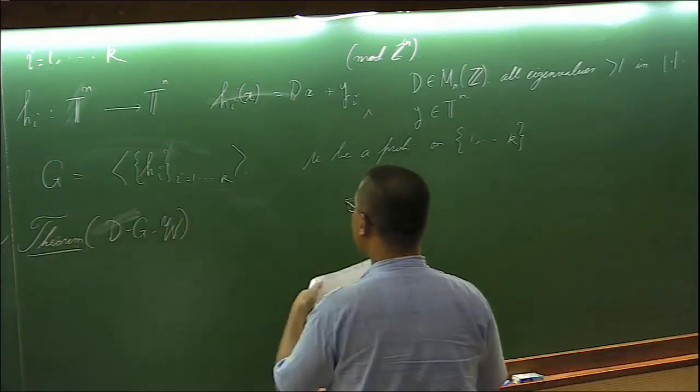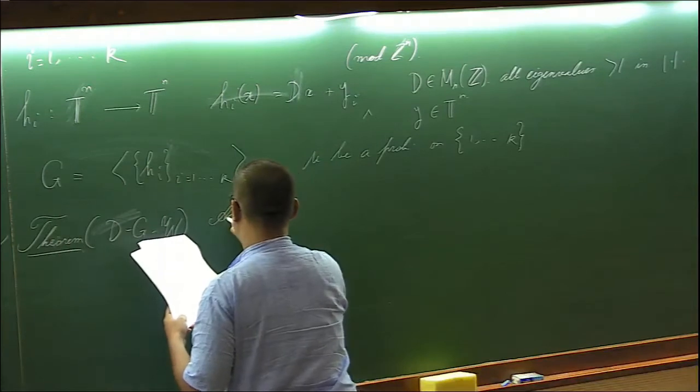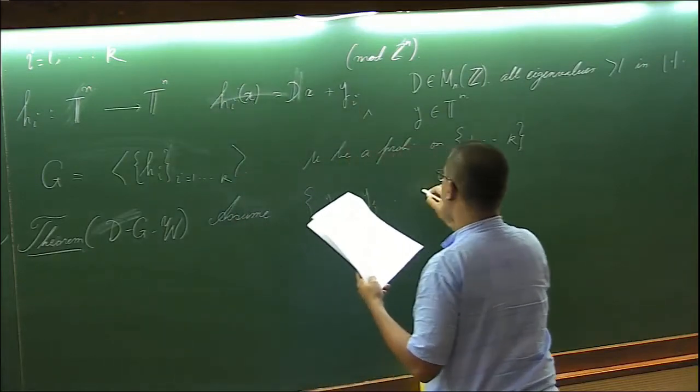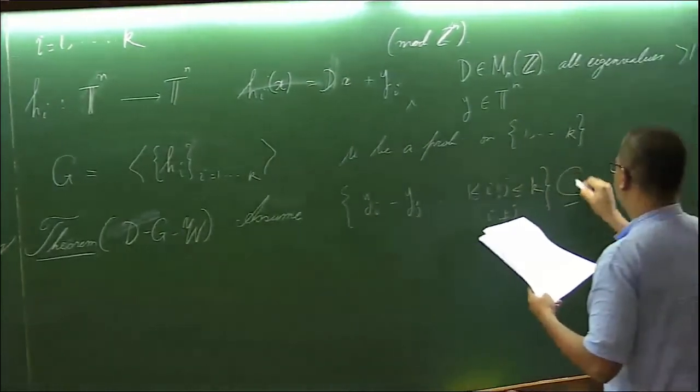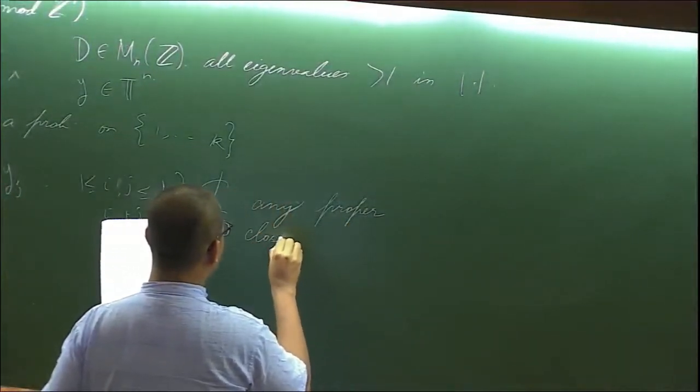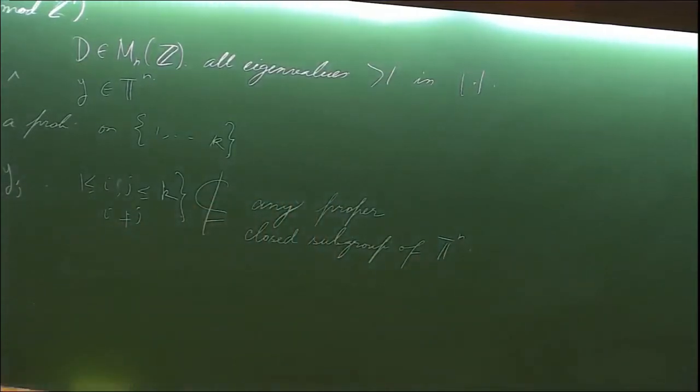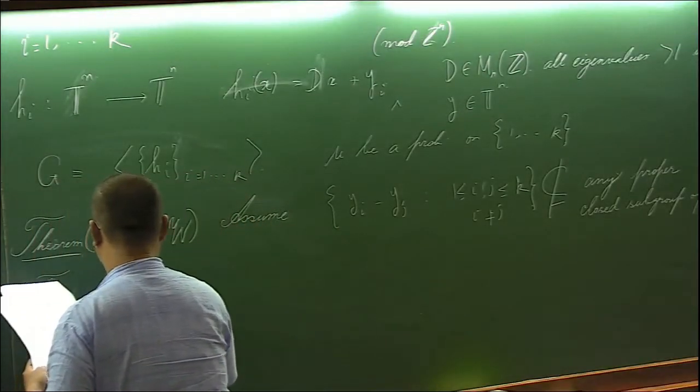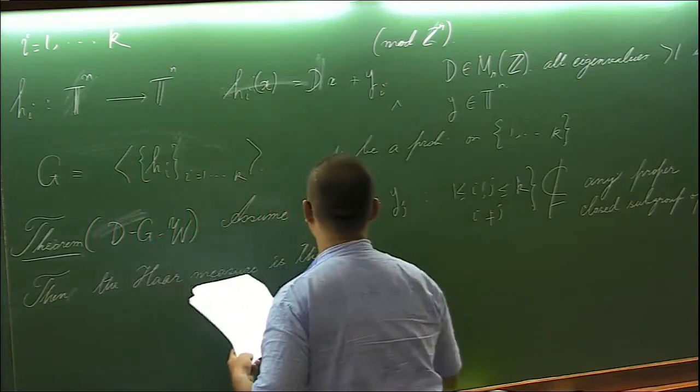In the setup described above, that is I have such a collection of maps, assume the set of all differences in the translations yi minus yj. Assume that this set is not contained in any proper closed subgroup of TN. Then the Haar measure is the unique stationary measure.